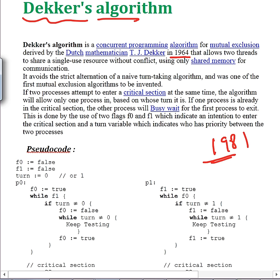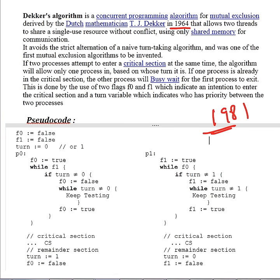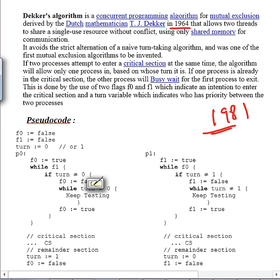Let's first see Dekker's algorithm. What you need is a couple of flags and a turn variable, similar to Peterson's algorithm. Firstly, you make your flag true — what you are doing with that is expressing your intention to enter the critical section. When your intention to enter the critical section is set, you have made your flag true.